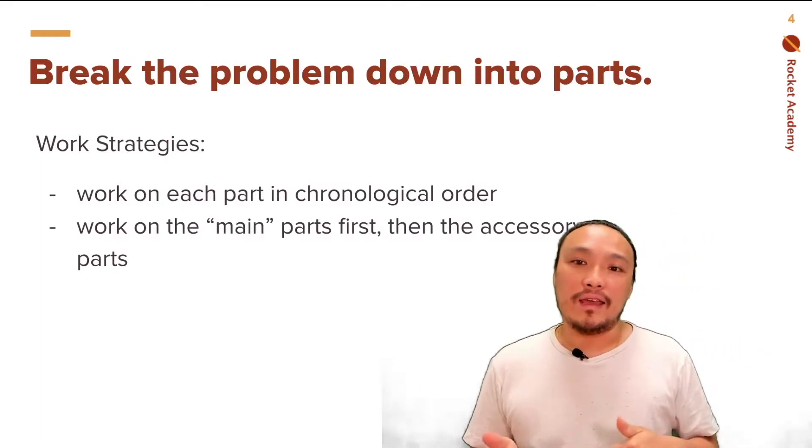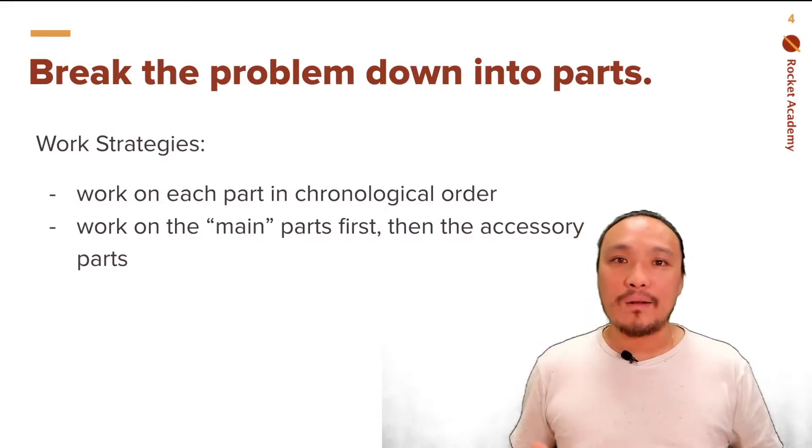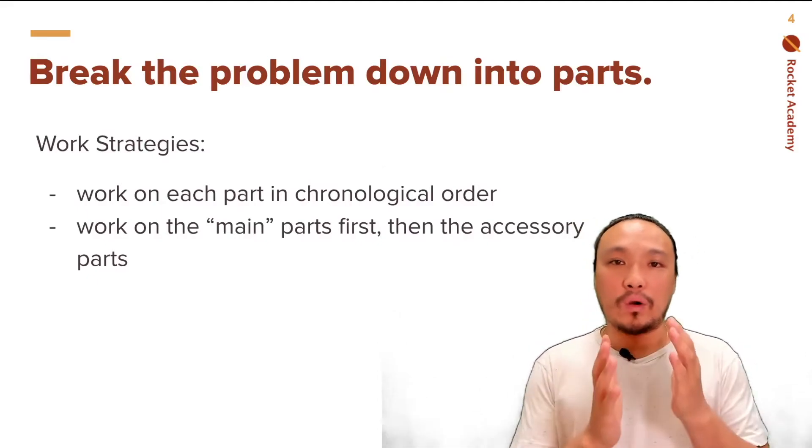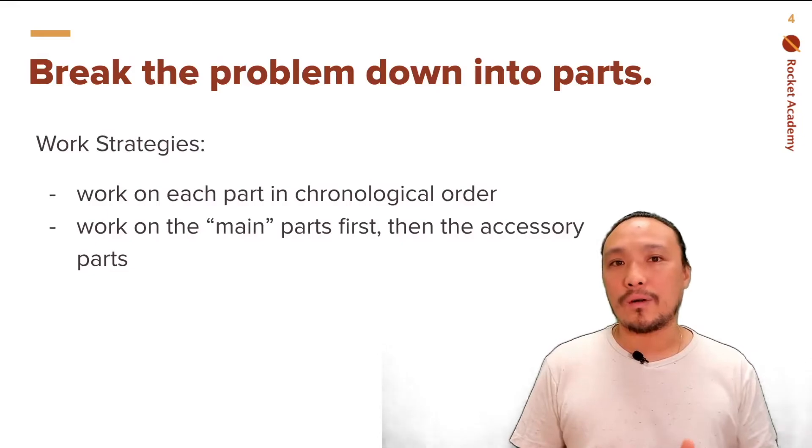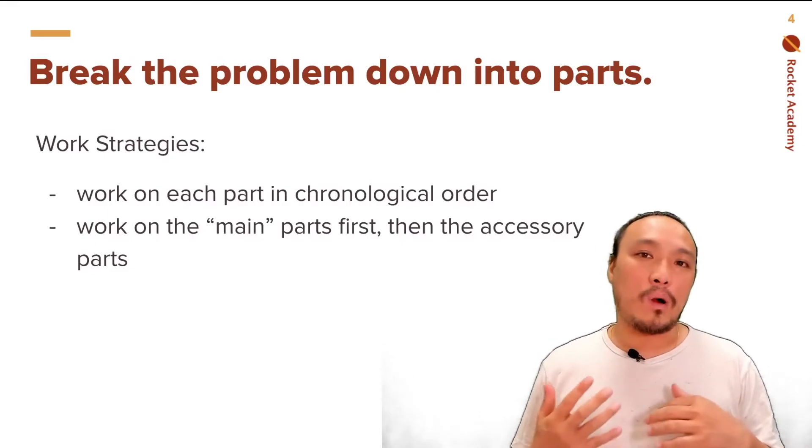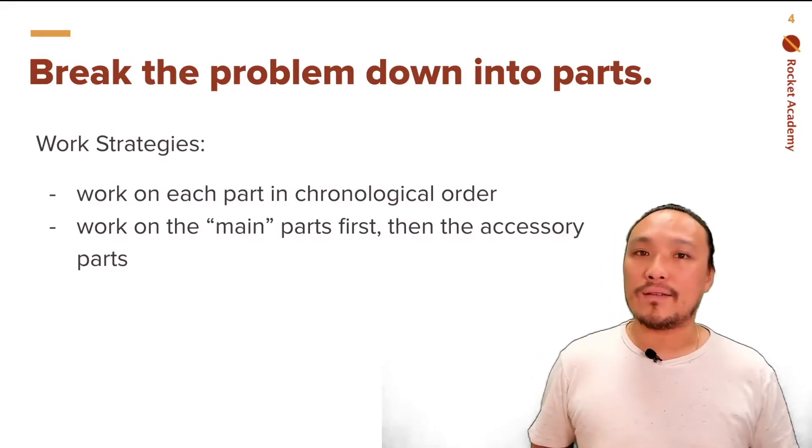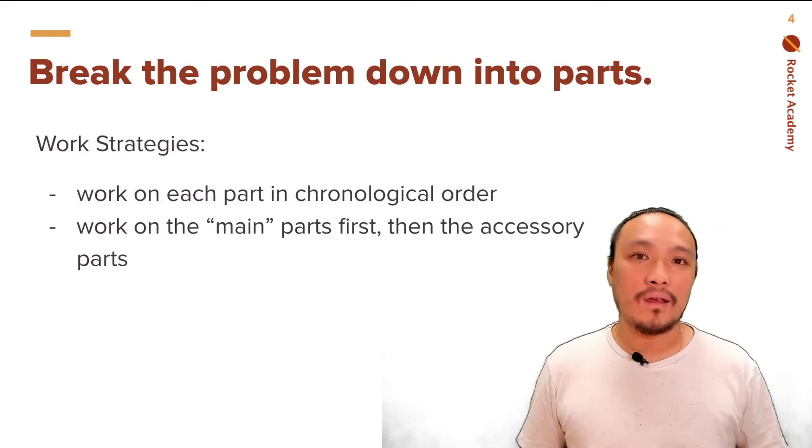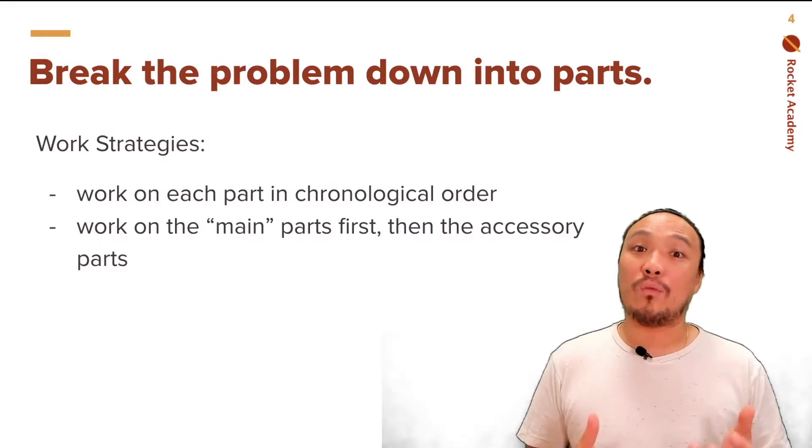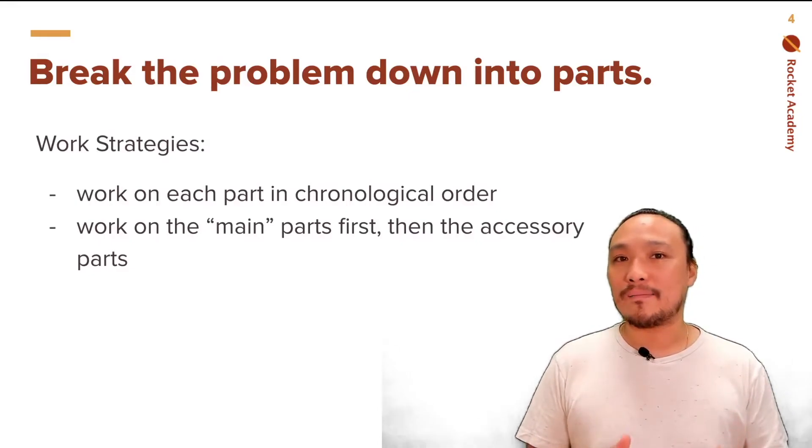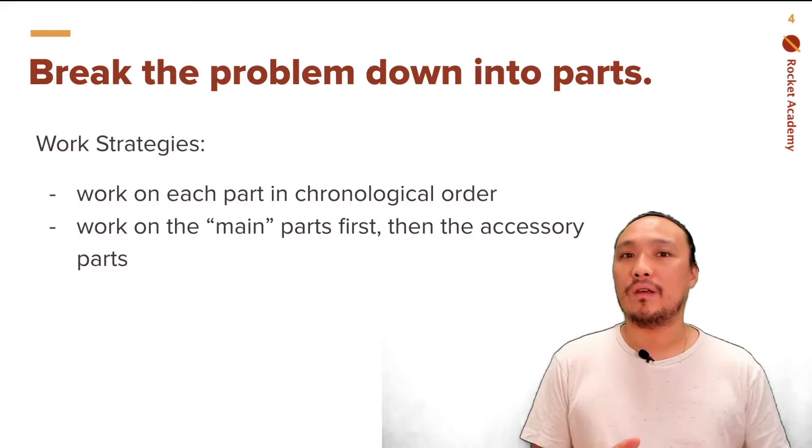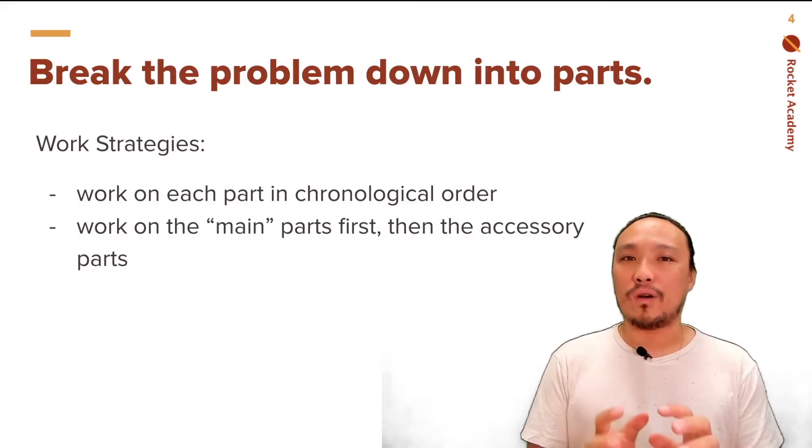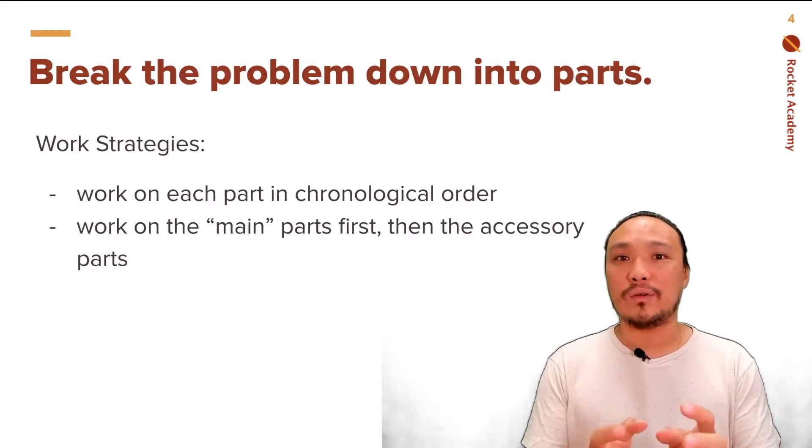The other strategy is to decide what the main part of the program is and begin working on that from chronological order. So the main part of the program can be defined in different ways. Some people also call this the MVP or the minimum viable product. It just means if you boil down what the program does to its essential nature, what are those parts and what is the program really actually doing at its core?